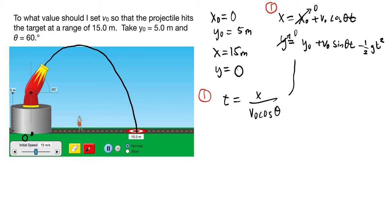And what I'm going to do is I'm going to plug that up here into equation two. So if I take equation two and write that out with the substitution, we get that zero is equal to my initial height y0 plus